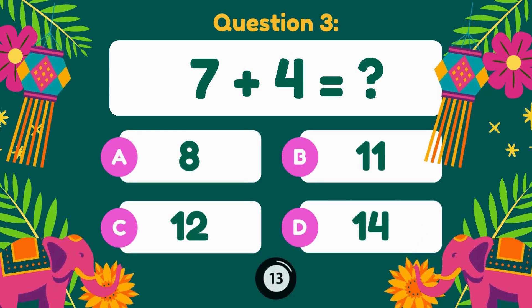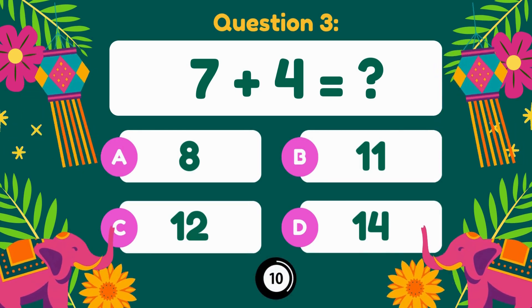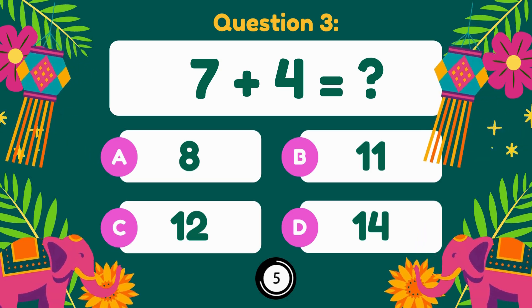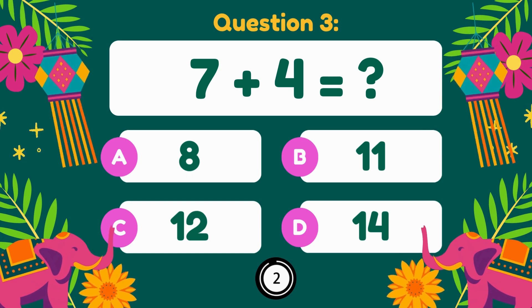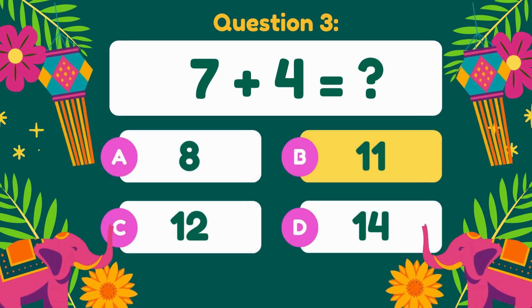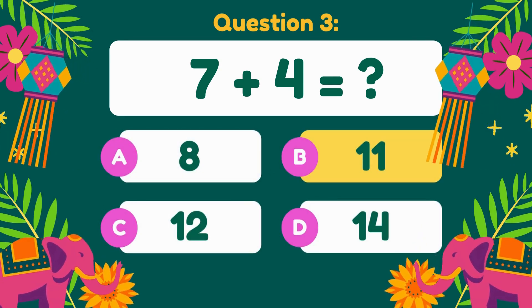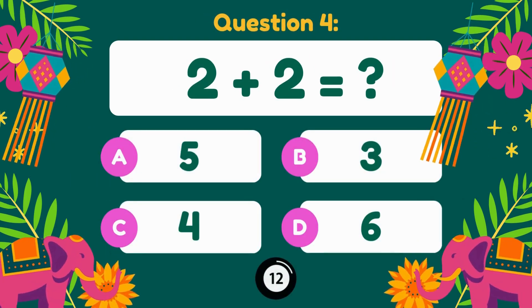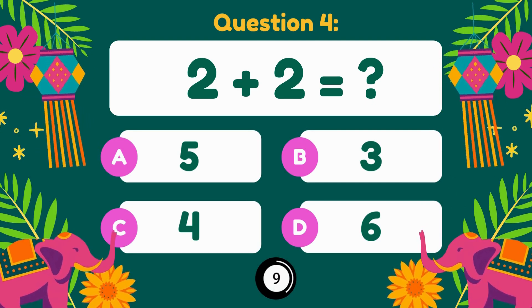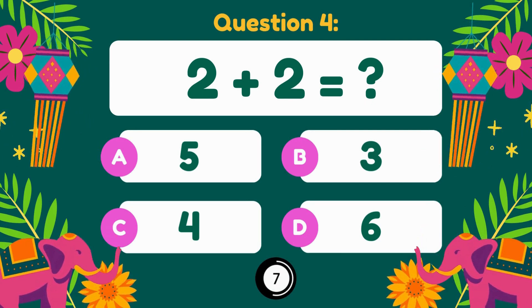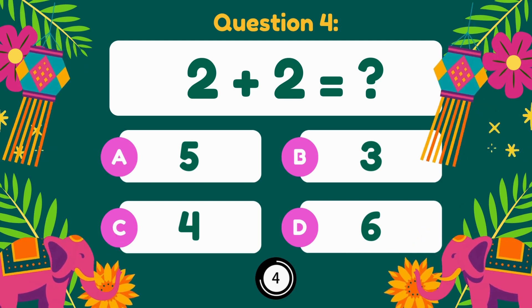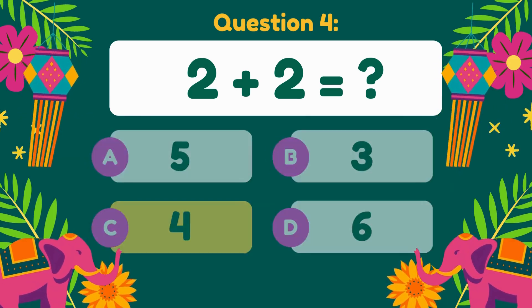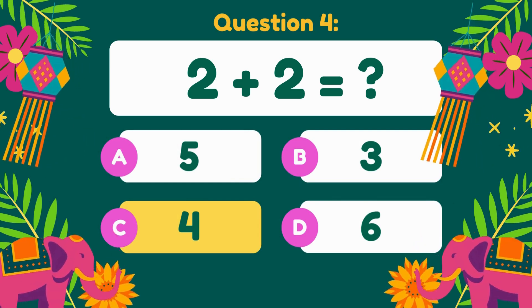7 plus 4 equals. 7 plus 4 is equal to 11. 2 plus 2 equals. 2 plus 2 is equal to 4.